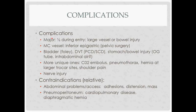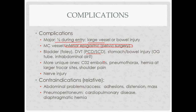Major complications often occur during the initial entry period and include damage to large vessels — the abdominal aorta or common iliacs — or bowel. The most common vessel injured by number, however, is the inferior epigastric artery. Bladder injury can be reduced by placing a Foley catheter; you'd suspect injury if you saw air or blood in the Foley bag. DVTs can be prevented with PCD or SCD boots. Stomach or bowel injury risk is reduced with an OG tube. Intra-abdominal air on CT or X-ray after laparoscopic surgery doesn't necessarily mean bowel injury, but increasing intra-abdominal air should raise concern.